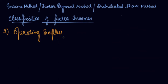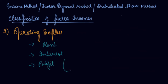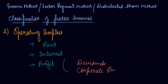The second category is operating surplus, which refers to income from property and entrepreneurship. It includes: number one, rent; number two, interest; and number three, profit. Profits are further split into three parts — dividends, corporate profit tax, and undistributed profits.